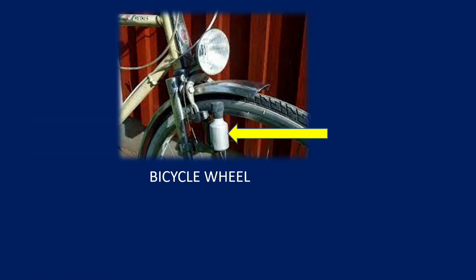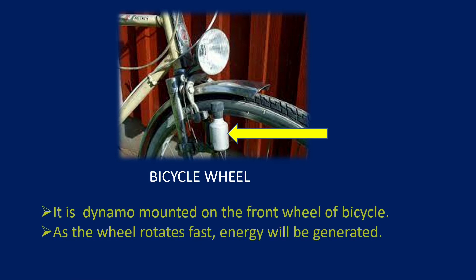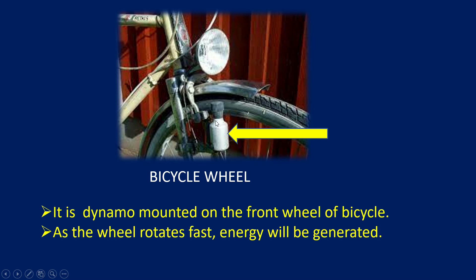What is this? It is a bicycle and a bicycle wheel. What is this arrow pointing to? It is a dynamo. A dynamo is attached to the bicycle wheel, and whenever we pedal the bicycle, the wheel rotates. With that rotation, some power will be generated by this dynamo and it is passed to the light source — we will get light during the night times. As the wheel rotates fast, energy will be generated. There are no capacitors to store this energy — automatically the energy converted is utilized for the lighting of the torch.